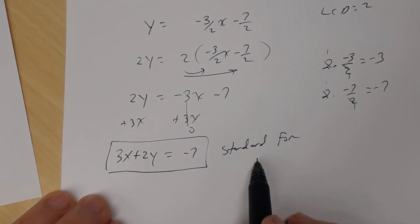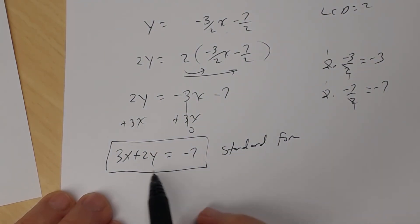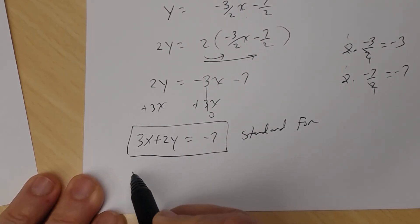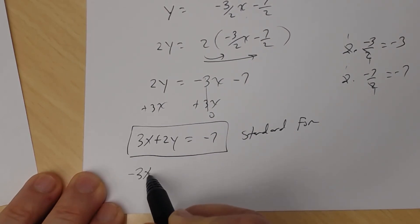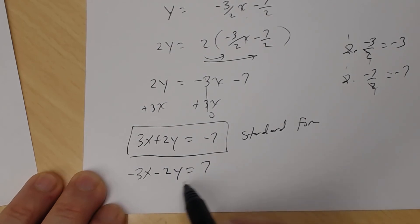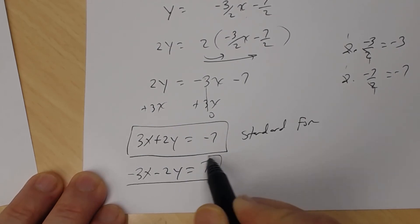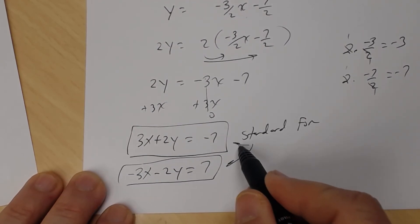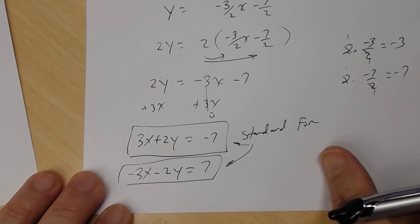The other way to write standard form for letter G is to change all signs: negative 3x minus 2y equals positive 7. Either one is correct.